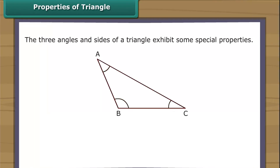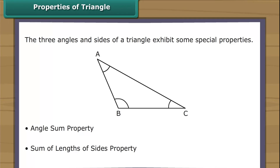The three angles and sides of a triangle exhibit some special properties: the angle sum property and the sum of lengths of sides property. Let us now learn about them one by one.